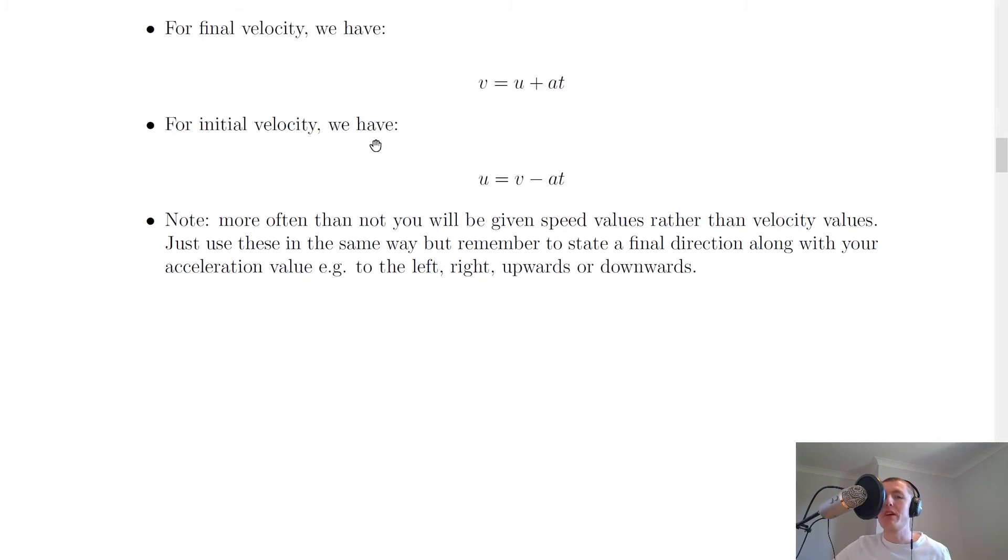And if we were rearranging for initial velocity, it would look like this, so u equals v minus at. Lastly, it should be noted that sometimes you might be given speed values rather than velocity values in the question, but just know that you should treat these kind of questions in exactly the same way, and you can state final directions along with your final acceleration values.